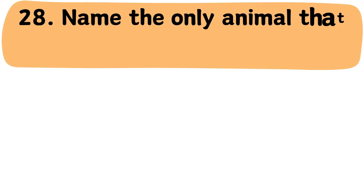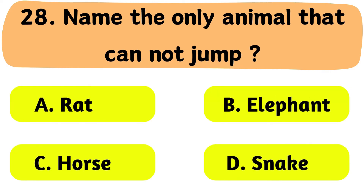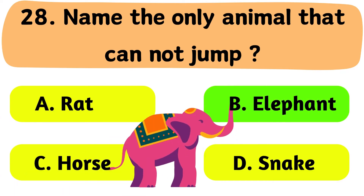Question No. 28: Name the only animal that cannot jump. A. Rat. B. Elephant. C. Horse. D. Snake. The correct answer is Option B: Elephant.